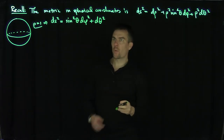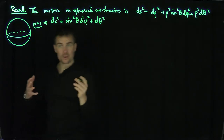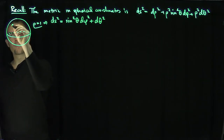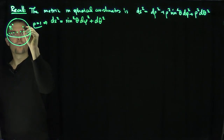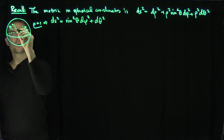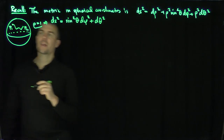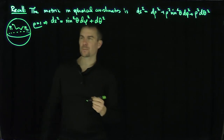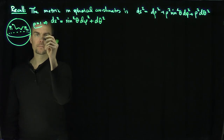Now I want to do the minimization question. If I go from a point P1 on the sphere to a point P2 on the sphere, what curve can I follow along the sphere that makes that distance as small as possible? That's the geodesic question.